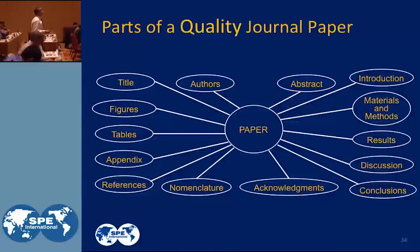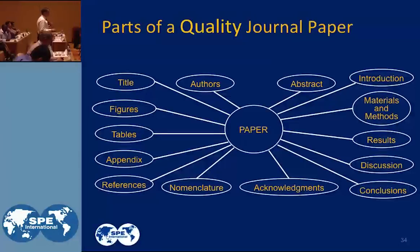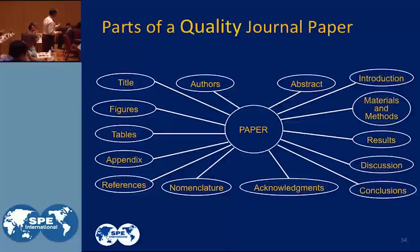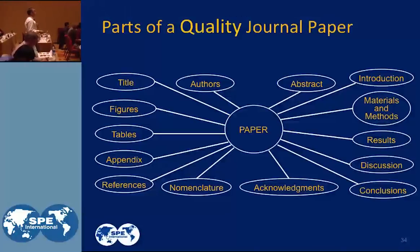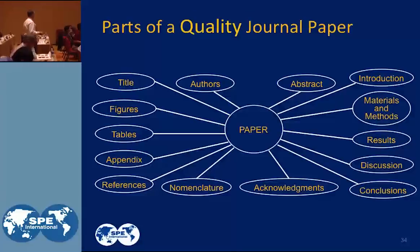Then there's acknowledgements, then nomenclature, then references, then the appendix. If you've got a lot of additional work that's too detailed to go in the body of your paper, you can put it in the appendix. There's also the tables and figures. The figures and tables can go in the body of the paper, but a lot of people like to put them in the back because there's a lot of them. If there are just a few, you can put them in the body of the paper.